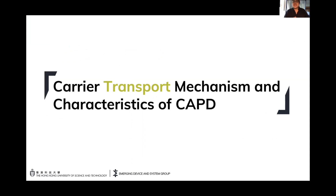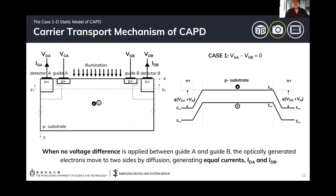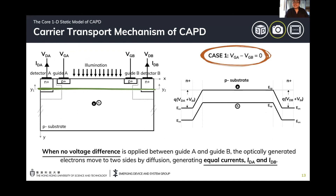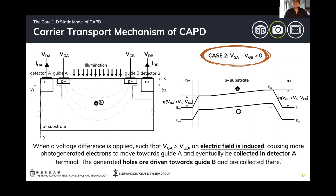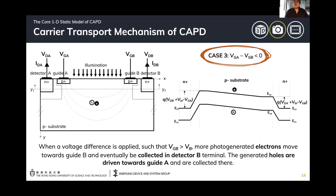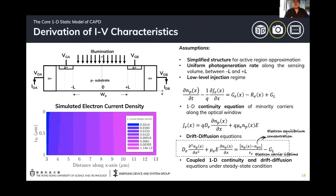To develop the model, we first analyze the carrier transport mechanism. To visualize the motion of carriers, we extracted the energy band diagram at a given cut line. In the most basic operation, when no guide bias difference is applied, photo-generated electrons will just move towards the detector nodes mainly by diffusion or random movement. But if we apply a potential difference over the guide electrodes such that VGA is greater than VGB, an electric field or drift component is introduced along the window, facilitating electrons to move towards guide A and be collected at detector A, while photo-generated holes are redirected towards guide B. The opposite is true when VGB is greater than VGA.